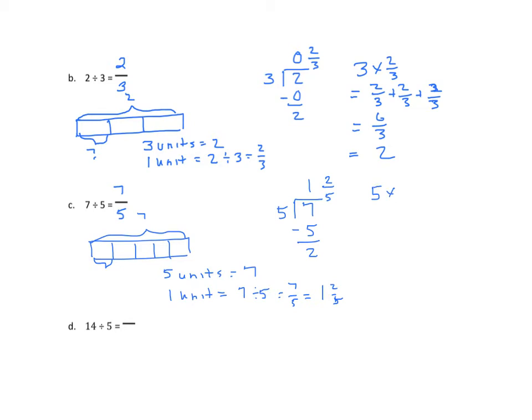Now we'll do our check. 5 times, we'll use the mixed number, 1 and two-fifths, equals 1 and two-fifths plus 1 and two-fifths plus 1 and two-fifths plus 1 and two-fifths plus 1 and two-fifths. We'll find the sum of the whole numbers, that's 5, and the sum of the fractions, we have two-fifths times 5, that's ten-fifths, and ten-fifths is equal to 2, so 5 plus 2 equals 7, and that gets me back to my dividend.